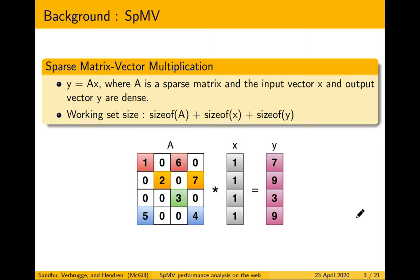Next we look at SpMV — sparse matrix vector multiplication — defined as y = Ax, where A is a sparse matrix, x is a dense input vector, and the output y is also a dense vector. To calculate SpMV, for each row we multiply the non-zero value with the corresponding x value and sum the results. For example, we multiply 1 by x plus 6 by x to get 7, and similarly for each row.